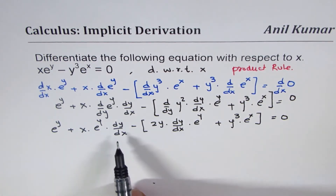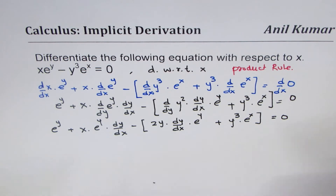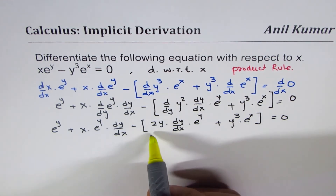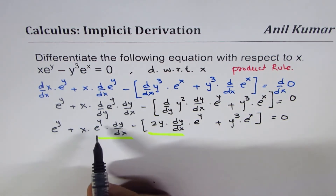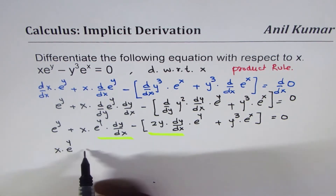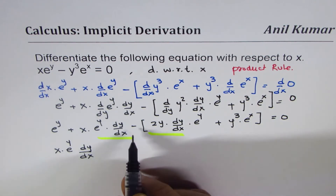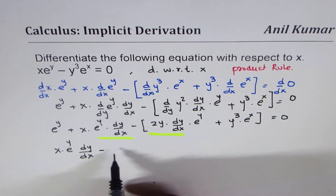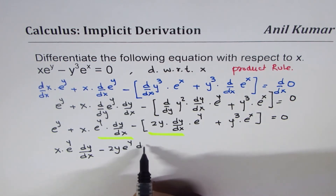Now, since we need to find dy/dx, we'll leave terms with dy/dx on the left side and take the other terms to the right side. So we have these two terms with dy/dx. Let me write them first: x times e to the power of y times dy/dx, and then when you open the bracket, you get minus 2y e to the power of y times dy/dx.